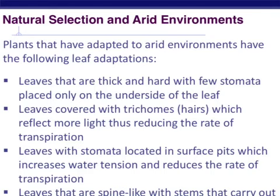Let's start with arid environments — arid just means dry, not a lot of water, so think desert. Some adaptations plants have to a dry environment include having a thick cuticle and having very few stomata on their leaves, and if they do have any, they'll be on the underside, not on the top side. Another adaptation is growing hairs on your leaves called trichomes. They tend to be a light color like white or cream, which allows them to reflect light from the leaf surface and reduces the rate of transpiration.